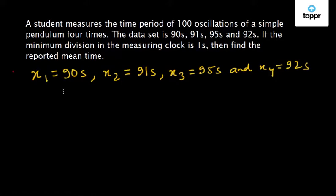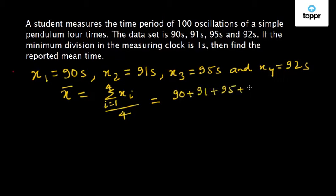So the mean of the data can be written as x-bar equal to sigma i equal to 1 to 4 xi by 4. And this comes out to be 90 plus 91 plus 95 plus 92 by 4.